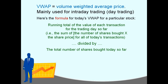So in case you're curious, here's the formula for today's VWAP for a particular stock. It is the running total of the value of each transaction for the trading day so far — the sum of the number of shares bought times the share price for all of today's transactions, divided by the total number of shares bought today so far. You don't necessarily need to know the formula to be able to use it, but it certainly helps.